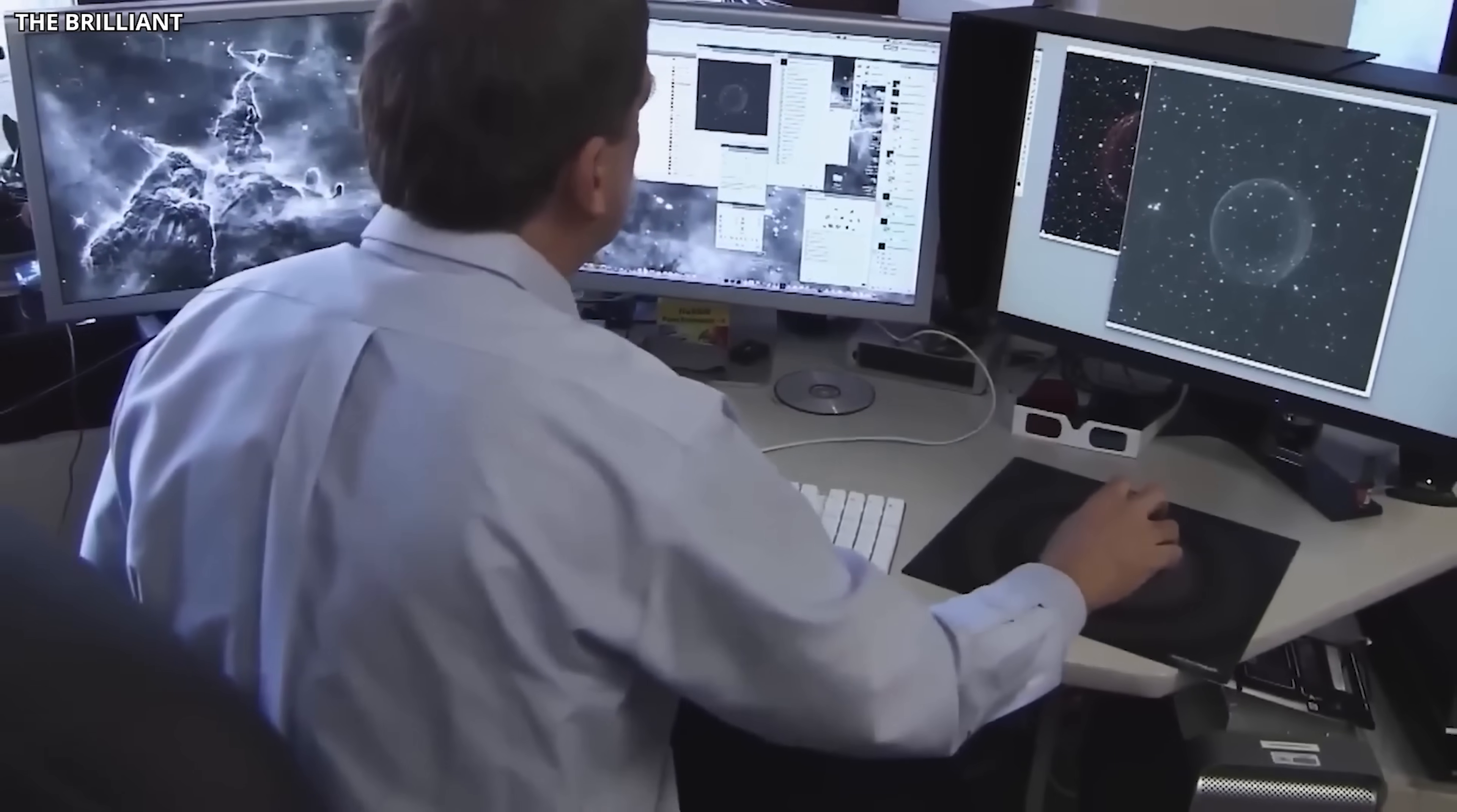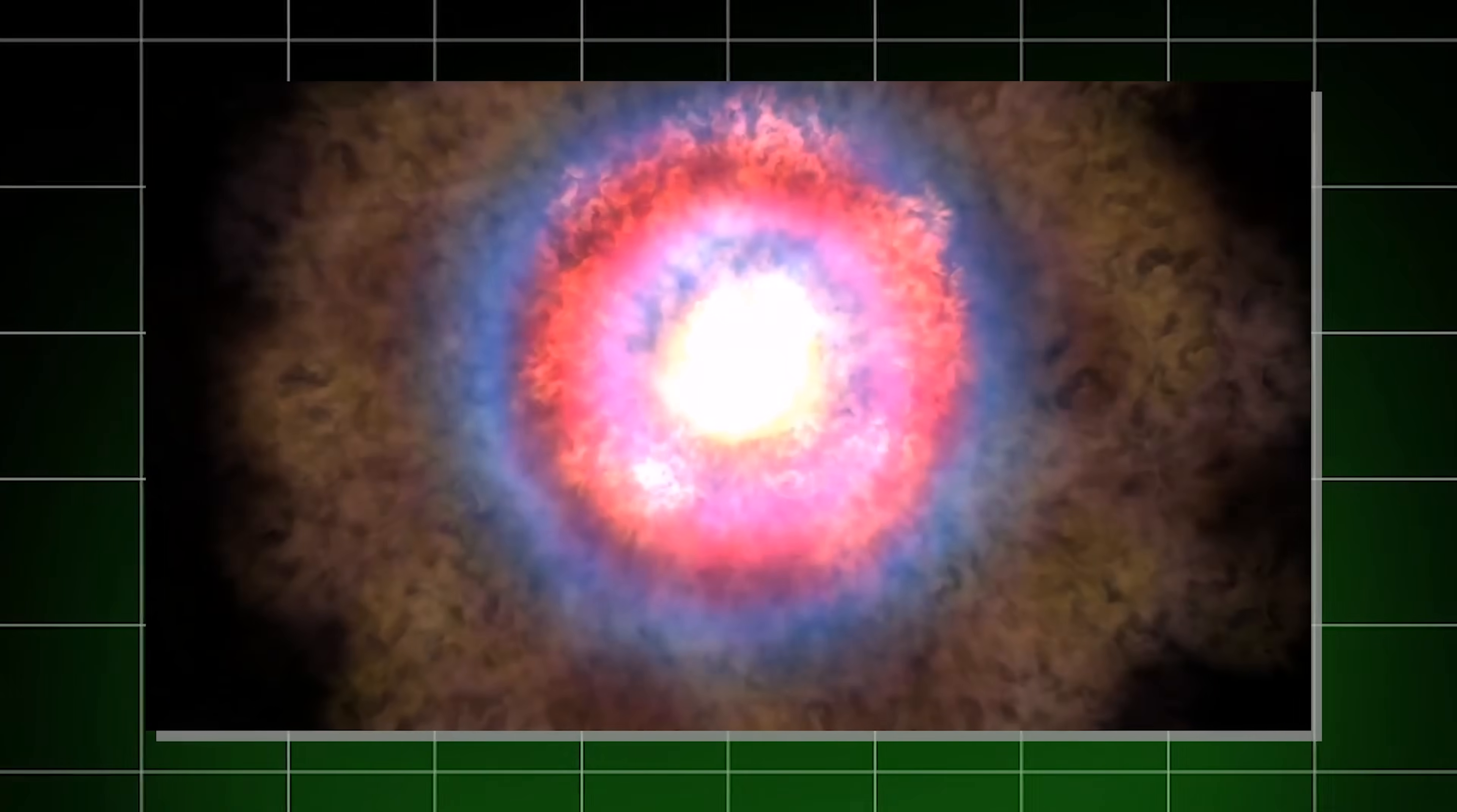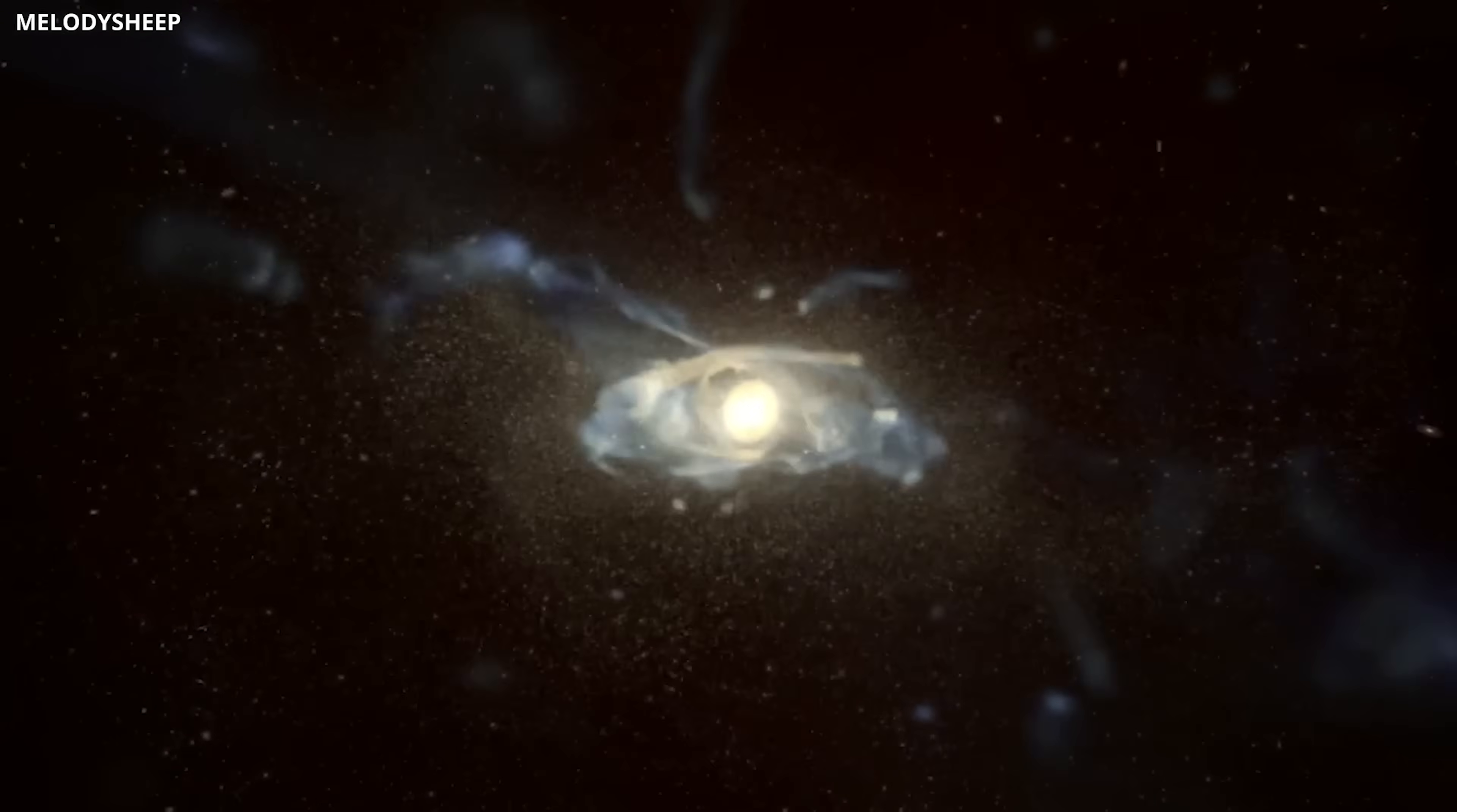Traditionally, scientists have attributed galaxy formation to the influence of dark matter, which makes up about 85% of the universe's mass, but does not interact with light. Dark matter halos are thought to shape galaxies by pulling in gas and stars, guiding their growth over billions of years. Yet Webb's data revealed that in the case of Sirius 2112, ordinary matter, not dark matter, played the dominant role in galaxy evolution when the universe was just two billion years old.